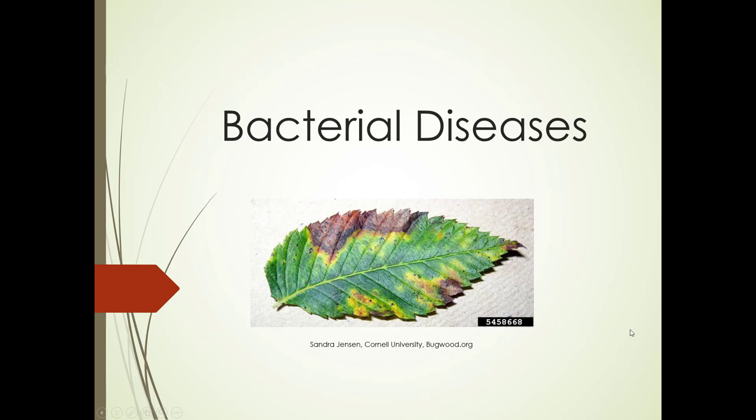We're going back to diseases — this is bacterial diseases. This particular disease is on elms, which you may have come across a lot of issues with. They do tend to have problems. This is bacterial leaf scorch, which is a bacterial disease.